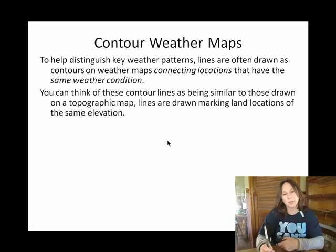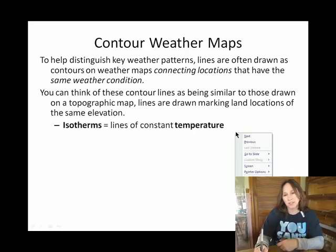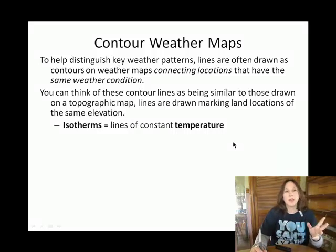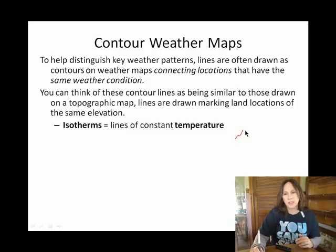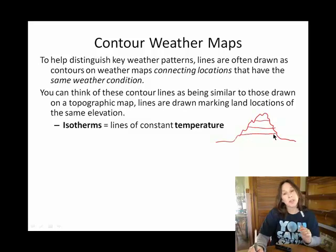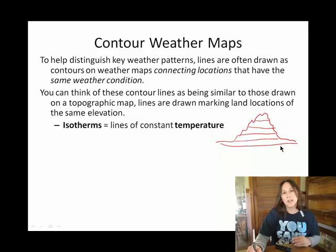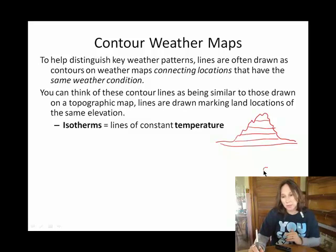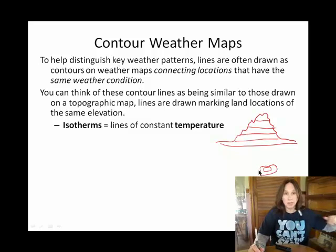Contour maps are very similar to topography — kind of showing elevation. For instance, if this is a mountain and I want to create a topographic map of that mountain, I could look down on that mountain and draw what we call contour lines. Those lines are connecting locations at the same elevation. So in a bird's-eye view, this would be my highest point — the top of my mountain. These contour lines are all connecting locations at the same elevation.